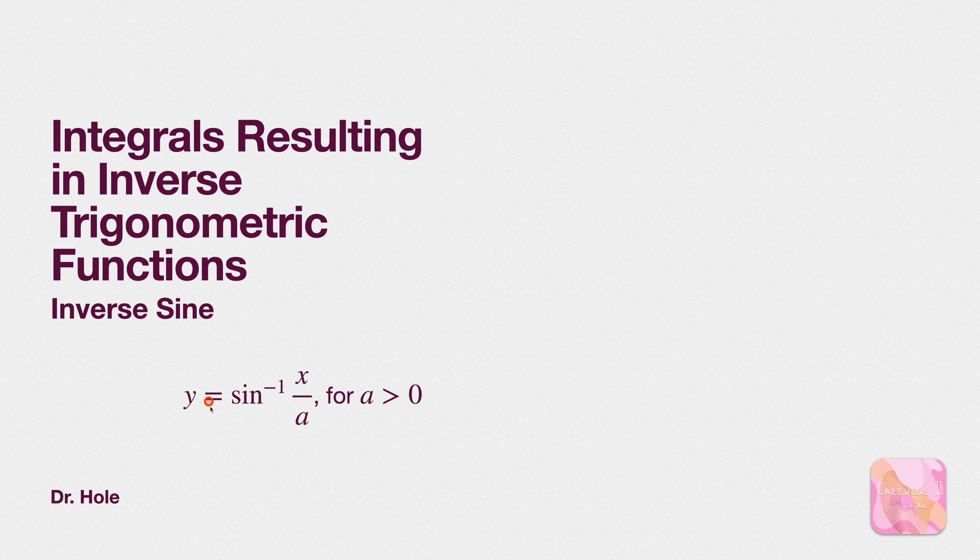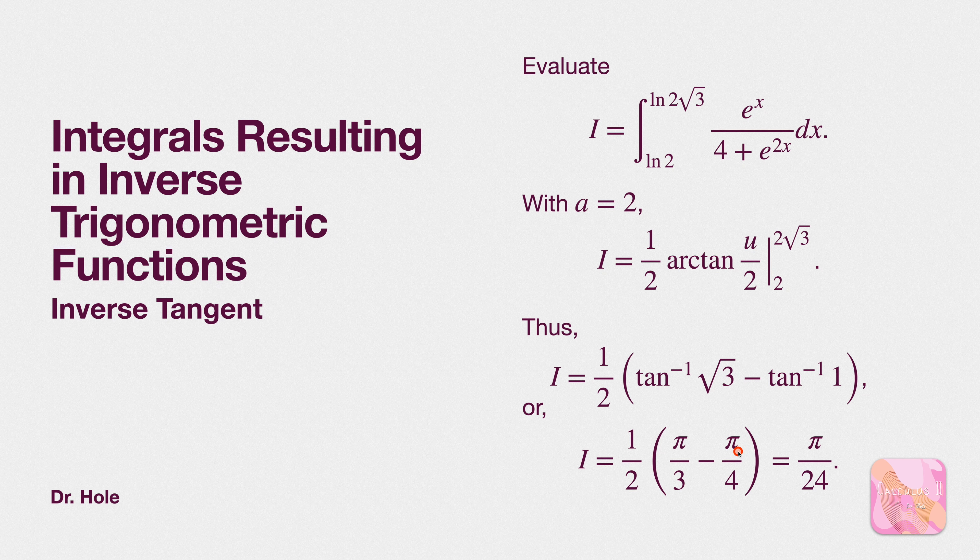Good so new bounds on u and an integrand which exactly matches this formula. So plugging in with a equaling 2 we have 1 over 2 arctan of x which is now u over 2 and then evaluate it at bounds. So plugging in we get i is arctan of rad 3 2 over 2 goes to 1 minus arctan of 1 all multiplied by 1 half.